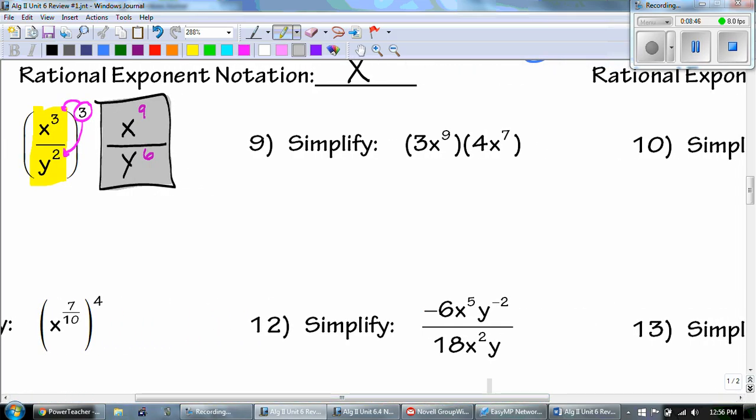For number 9, we're multiplying. So I multiply my coefficients, the numbers out front. 3 times 4 is 12. And then I add my exponents. 9 plus 7 is 16.